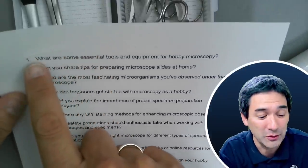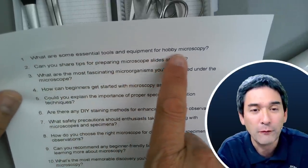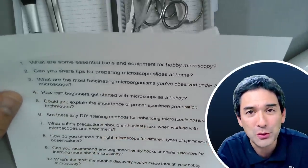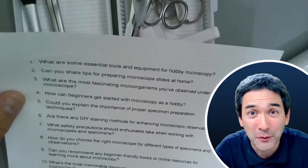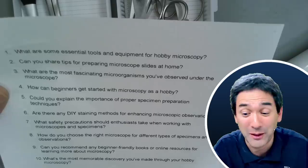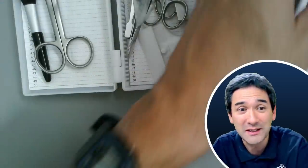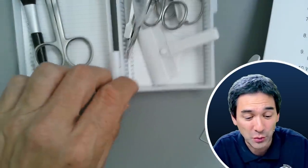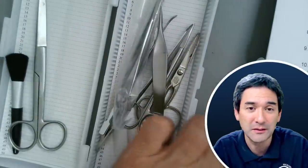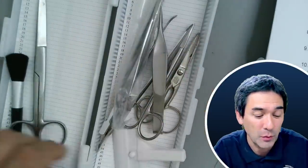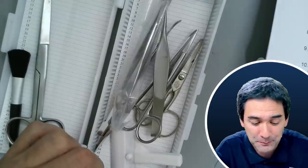I simply typed into the computer: 'Please generate 10 microscopy-related basic questions for my YouTube video.' As a matter of fact, they did a pretty good job. Some questions are quite introductory, others are a little more advanced. The first one is quite relevant: 'What are some essential tools and equipment for hobby microscopy?' The AI came up with that and I decided to show you some of the tools I use for preparing microscope slides.